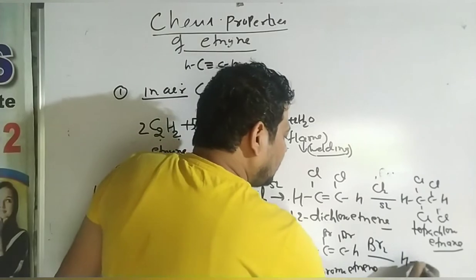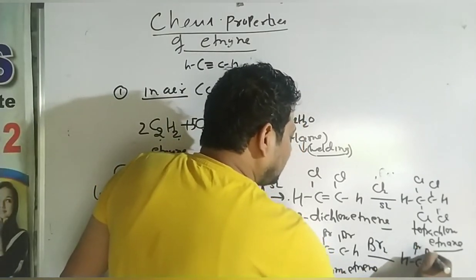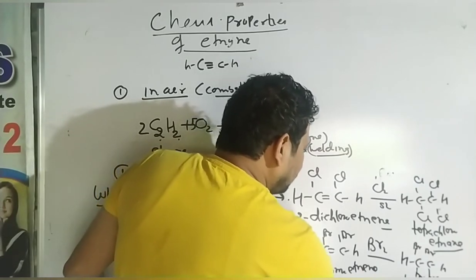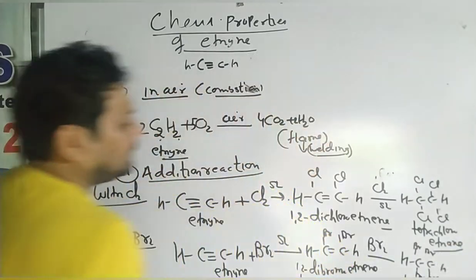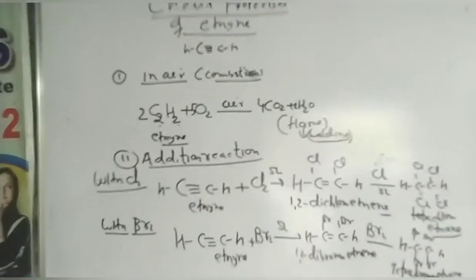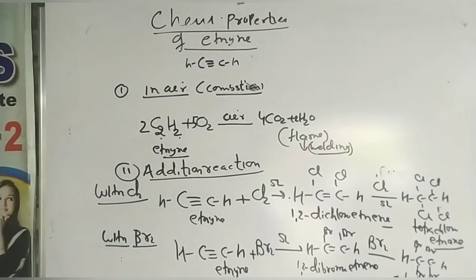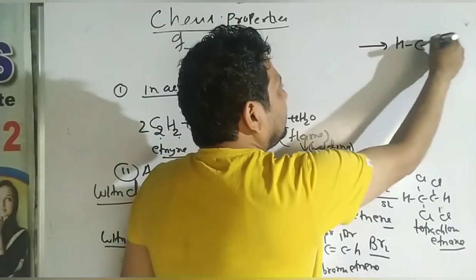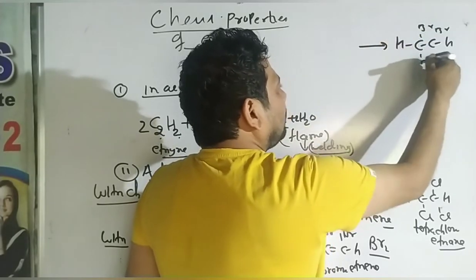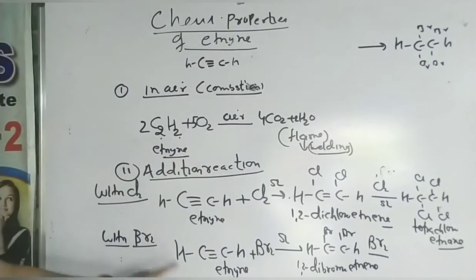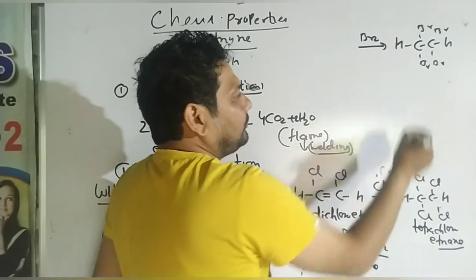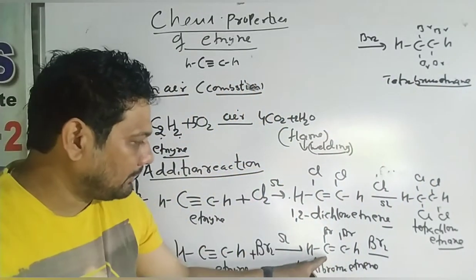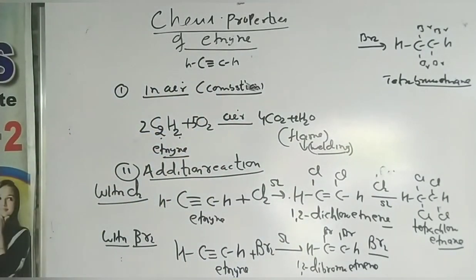If we add more bromine, we get tetrabromoethane — four bromine atoms total. The name becomes tetrabromoethane. So the addition reaction goes triple to double, then double to single, with chlorine and bromine in the presence of sunlight. This is the addition reaction of ethyne with halogens.